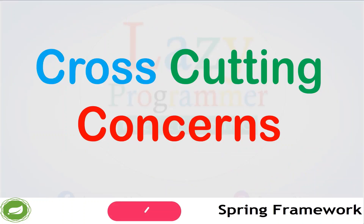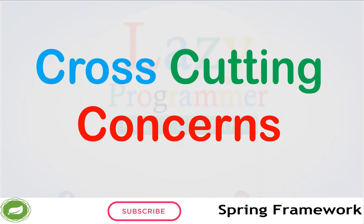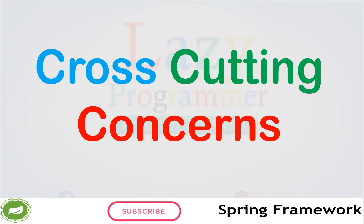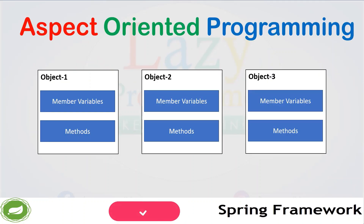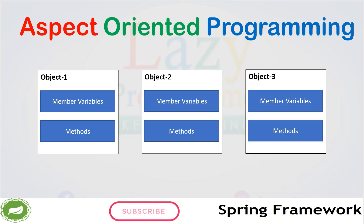To overcome the problem of tight coupling, we can use cross-cutting concerns. In every application, there are some common functionalities required across all modules that do not have much business value or business logic impact. Those are known as cross-cutting concerns — logging, security, and transactions are such cross-cutting concerns. Aspect-oriented programming can be very helpful in implementing those cross-cutting concerns. Instead of adding code in all objects or having a separate logging class, we create a logging aspect.